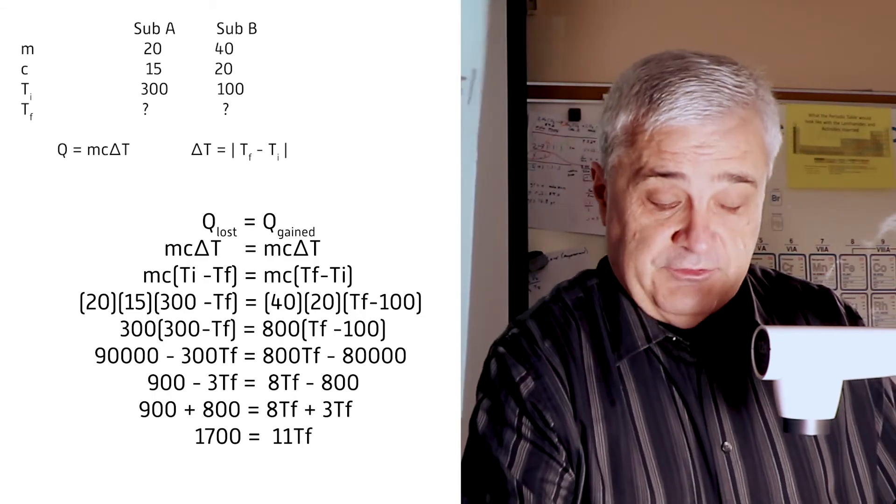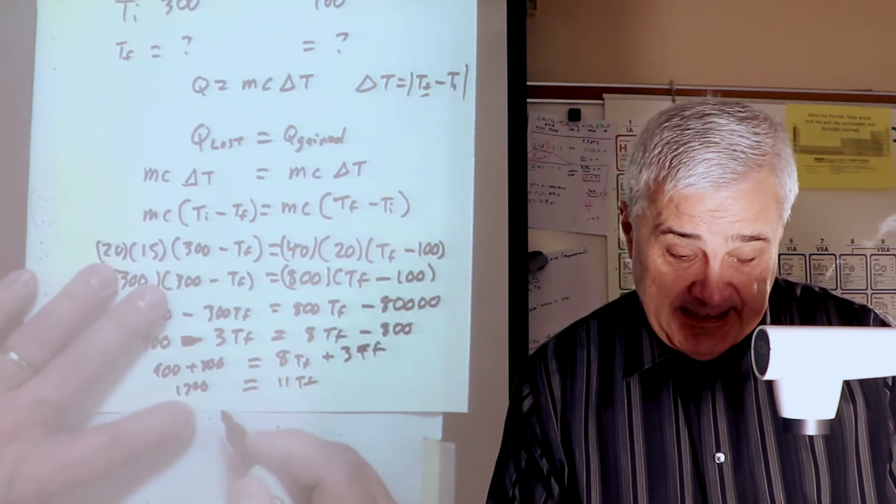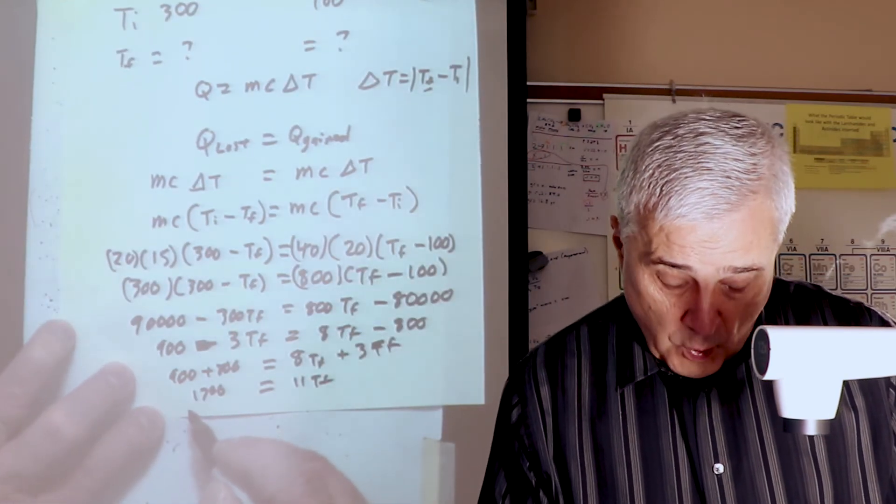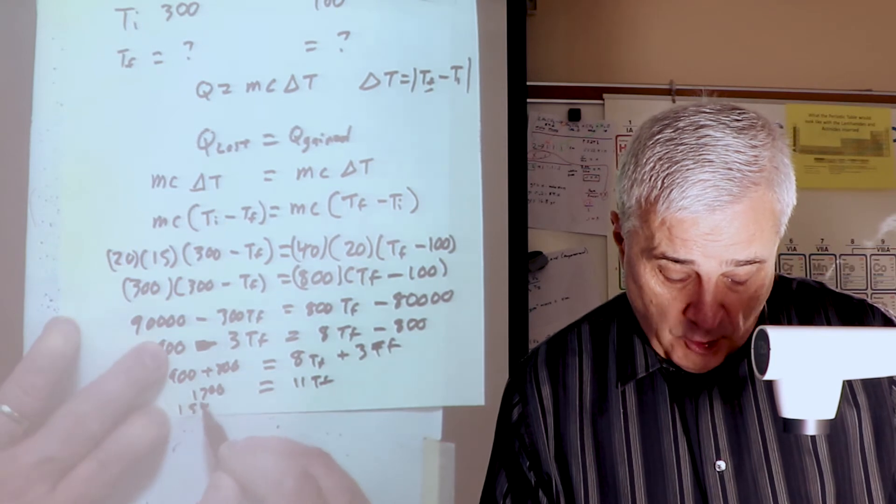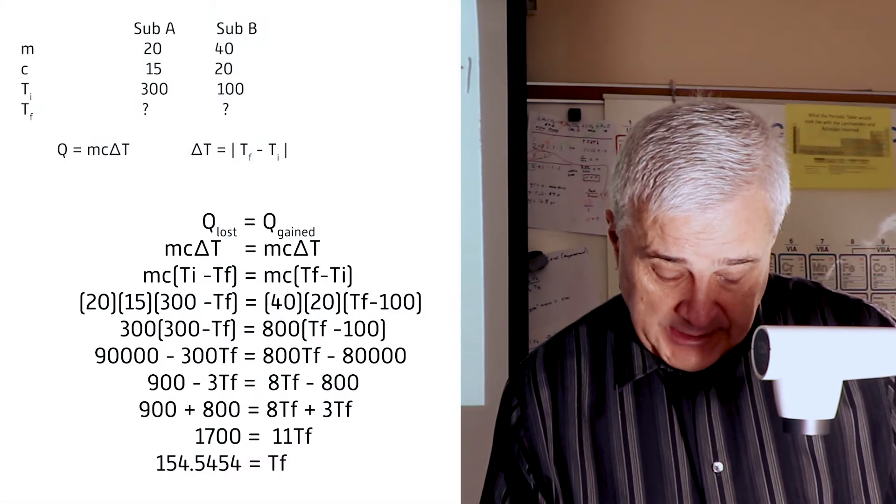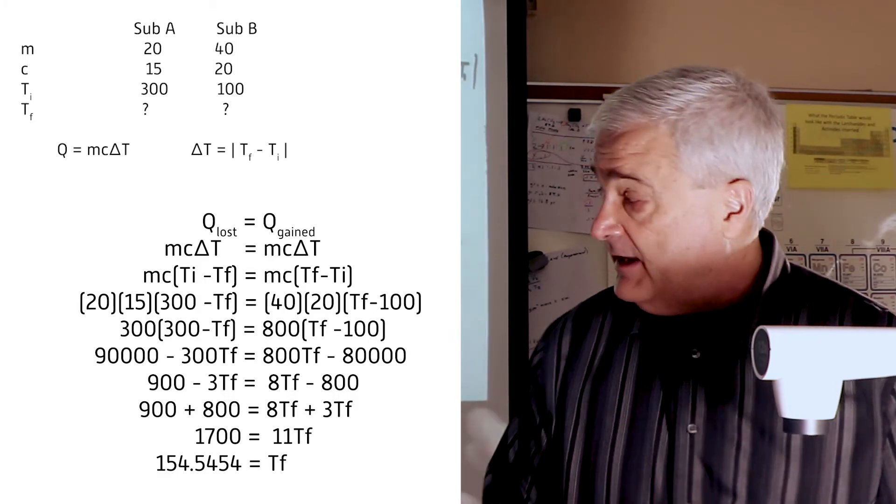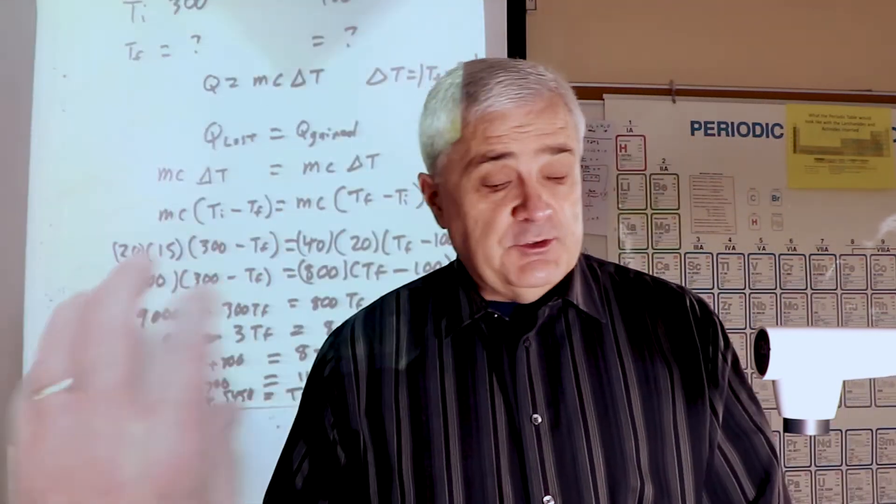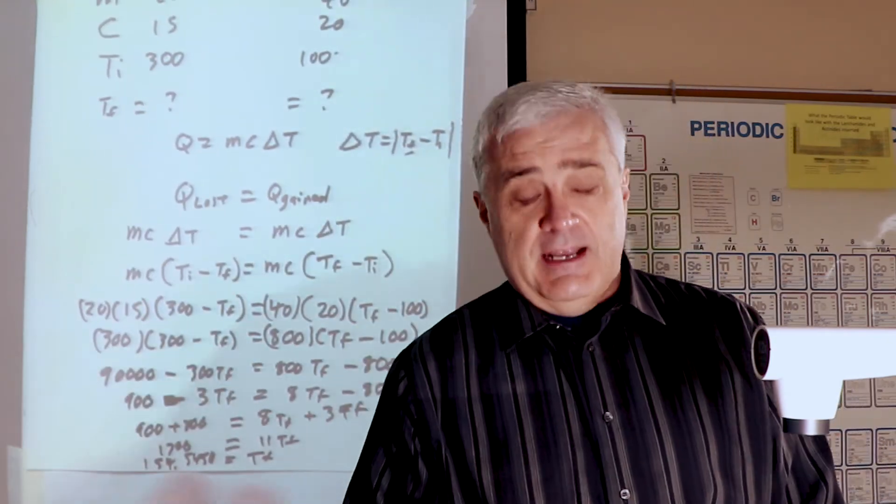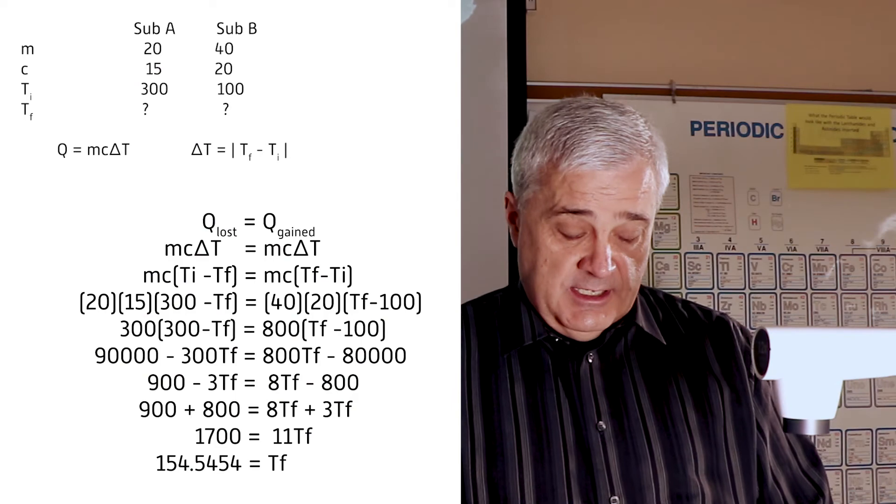Now I'm going to divide both sides by 11, and that's going to give me T sub F. I get 154.5454 repeated equals T sub F. And I know at this point you're saying to yourself, I am so glad you typed all that out on the screen because I can't read it.